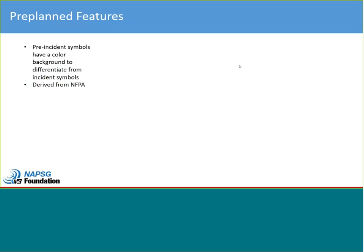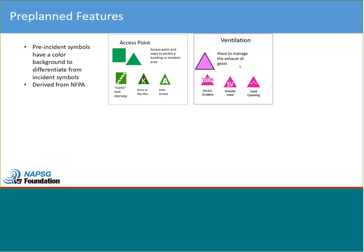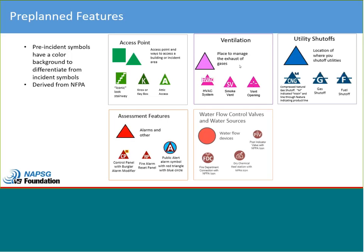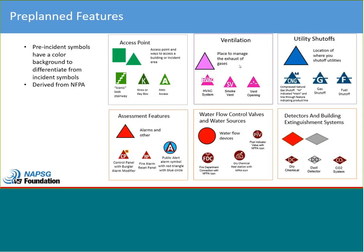Pre-planned features are symbols derived from NFPA and use a color background. This is because you can assume that even when hand-drawing on paper, you could take time to colorize them. Categories include access point, ventilation, utility shutoff, assessment features, water shutoff, detectors, and location of features. This is geared mostly toward pre-building and pre-incident planning, which many of our members have already started using.